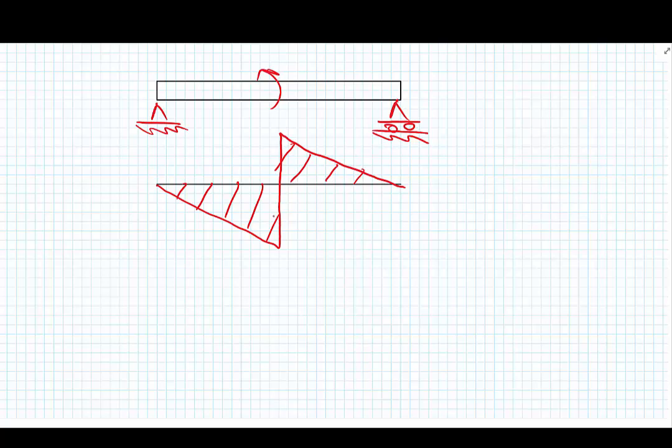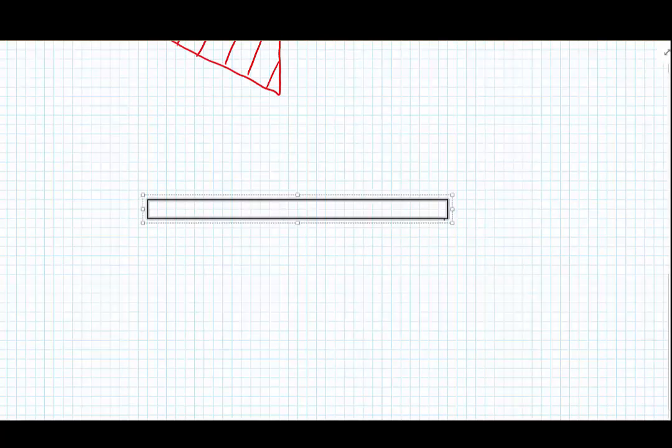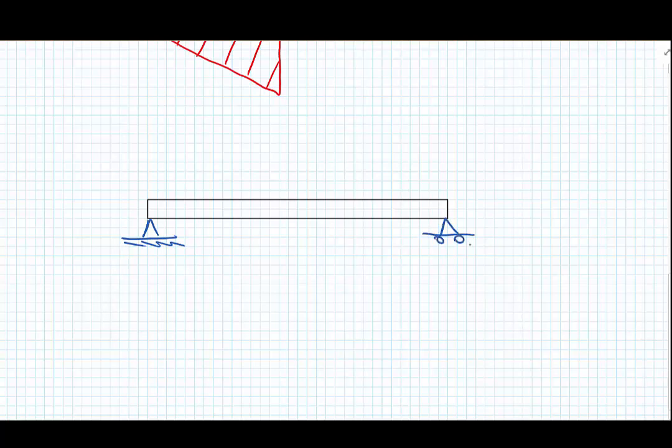So what we're going to do is start off with a simple example of a point load on a beam. So we have our beam with support conditions. We're just going to go simply supported, so we're dealing with a problem that we're very familiar with. Simply supported beam and a point load at any location along the beam.